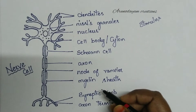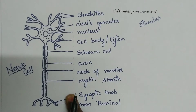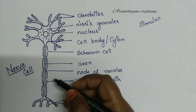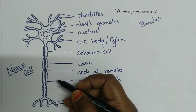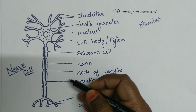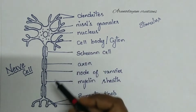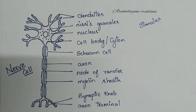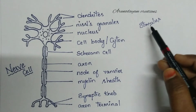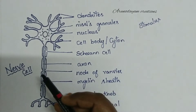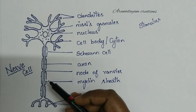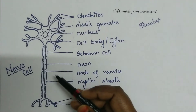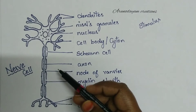Our nervous system contains around 10 billion cells. The nerve cell is called the structural and functional unit of the nervous system. The entire nervous system structure is made up of 10 billion nerve cells. It is called the structural and functional unit because the nerve cell helps receive a stimulus and create a response.